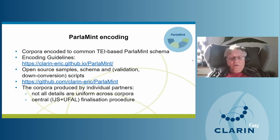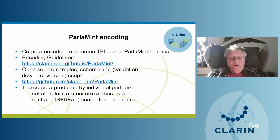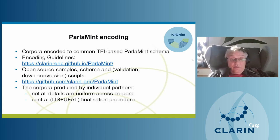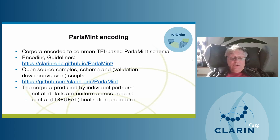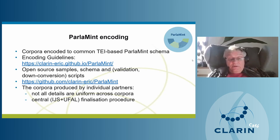From the ODD, we convert it into XML schemas for validation and also convert the guidelines into HTML form, readable at the GitHub Pages address. This provides detailed instructions on how ParlaMint corpora are encoded. On the ParlaMint GitHub you can find samples of the corpora — often seeing a sample is much easier to understand what's in there than reading the extensive guidelines — as well as the schema and all the scripts used to produce the corpora from what partners delivered.